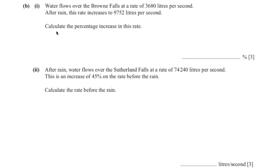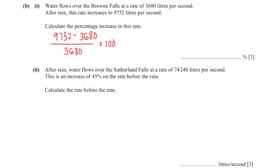Moving on to the next question — they want us to calculate the percentage increase. I'm going to do 9752 minus 3680 over the original value of 3680, multiplied by 100, and that gives 165 percent. So the percentage increase is 165 percent.